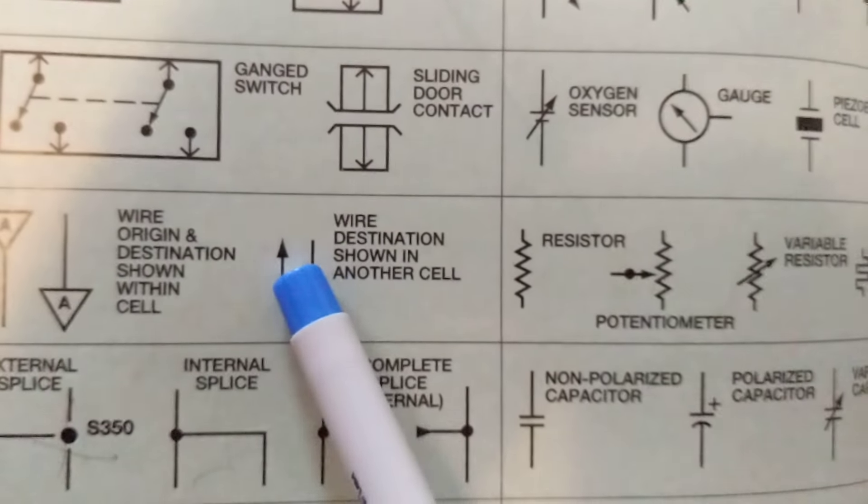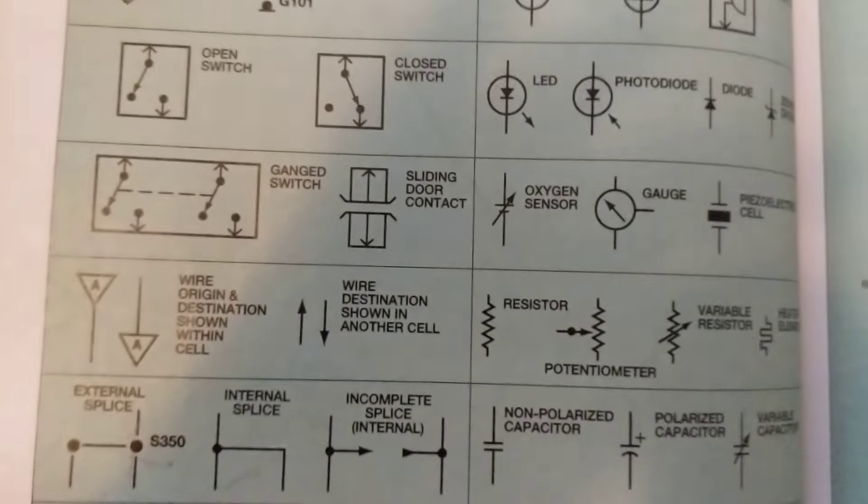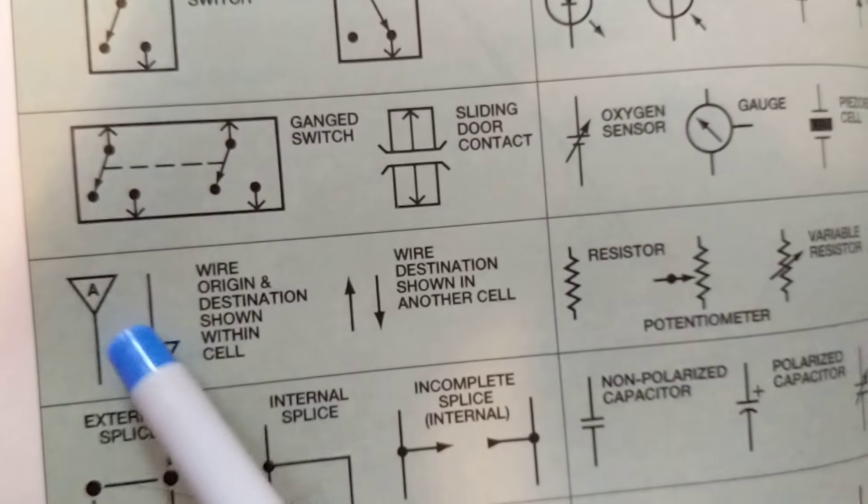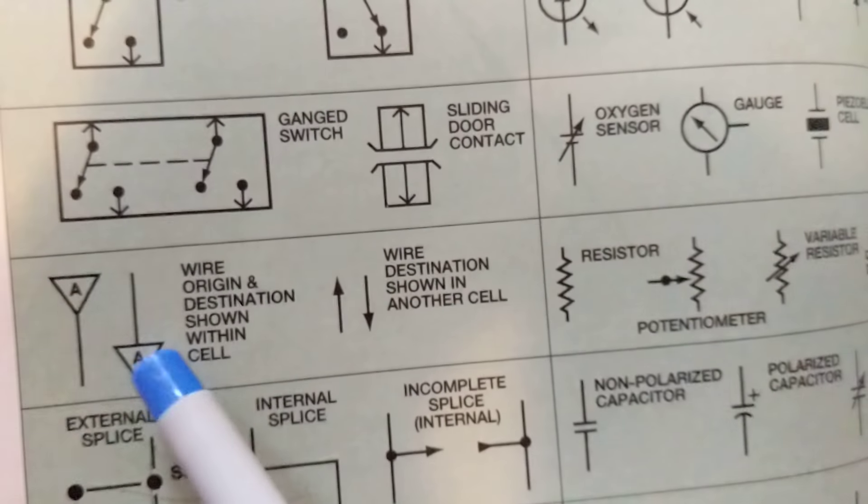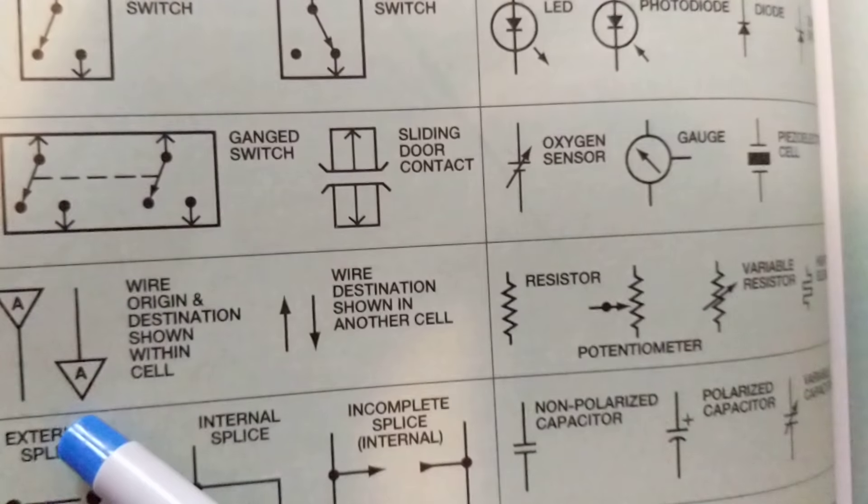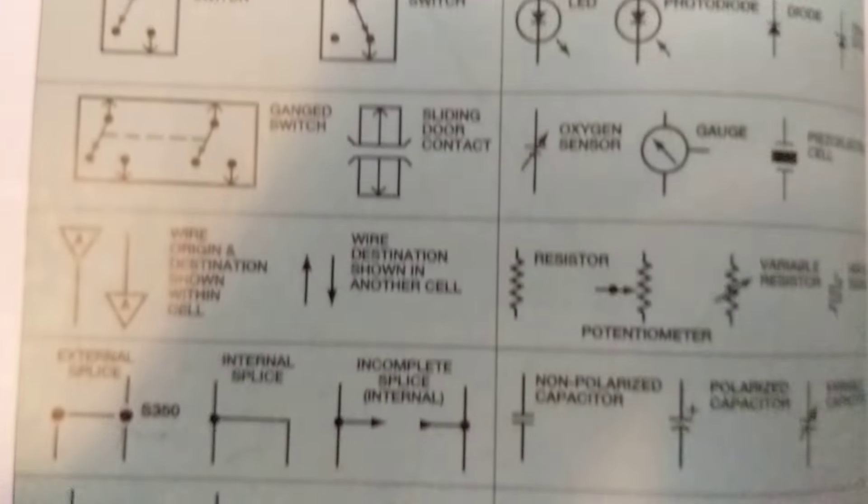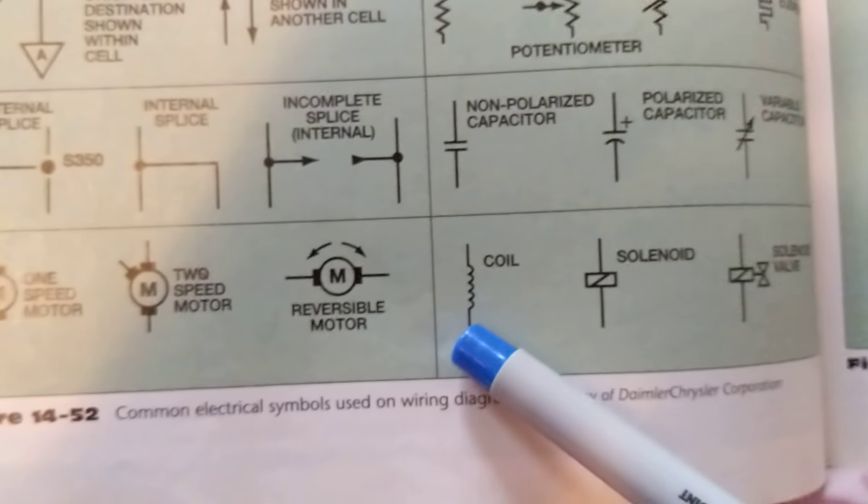Sometimes you don't have time to draw the whole schematic, you have to give it these denotations A and then you go look for another part on the schematic for A. If it would be B, you're going to look for another part of schematic that would say B. Remember these schematics are long and you can't fit everything on one page.